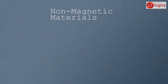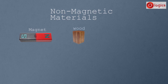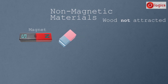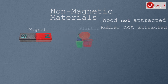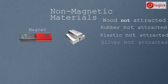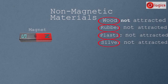Let's see non-magnetic materials. This is the magnet. This is a piece of wood — take the wood close to the magnet; wood is not attracted by the magnet. This is a piece of rubber — rubber is not attracted by the magnet. This is a piece of plastic — plastic is also not attracted by the magnet. This is a piece of silver — silver is also not attracted by the magnet. These materials are not attracted by the magnet, so they are known as non-magnetic materials.